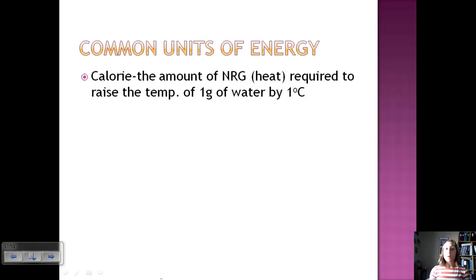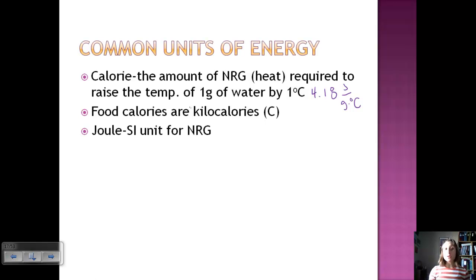So if you took a gram and you heated it up by one degree C, this would be the amount. Food calories, if you look at the back of a nutrition label, is in kilocalories. Calories are quite small, and this will be shown as a capital C. And by the way, for water, it's 4.18 joules per gram degree C. So we'll talk about the joule, but this is where calories are coming from. The joule is the SI unit for energy. So that's why our calories can be expressed also in joules. And one calorie is 4.184 joules. So it's based on water.